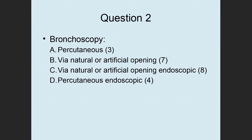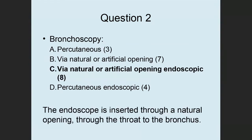Question 2: Bronchoscopy — is this percutaneous, via natural or artificial opening, via natural or artificial opening endoscopic, or percutaneous endoscopic? This is via natural or artificial opening endoscopic — value 8. You know it's endoscopic because it says 'scopy.' A bronchoscopy means the endoscope is inserted through a natural opening through the throat to the bronchus.